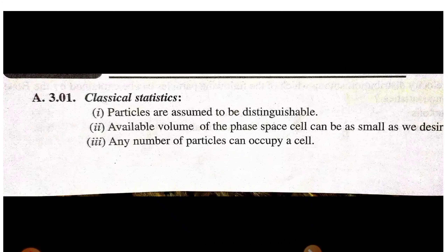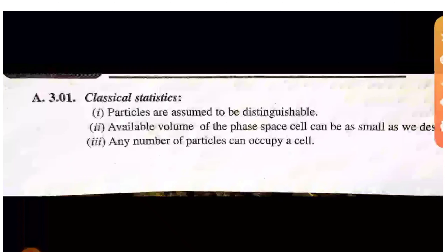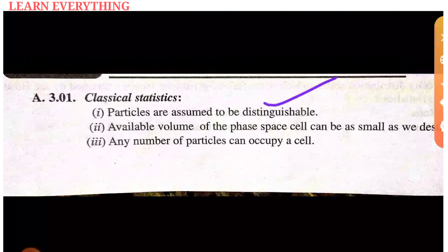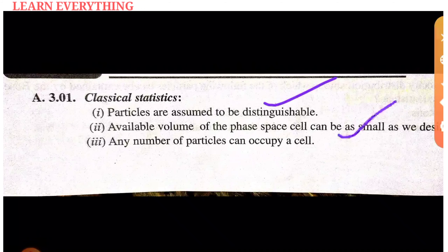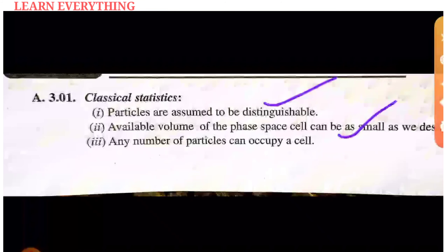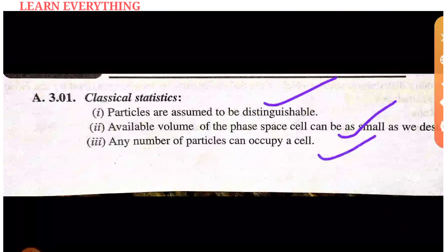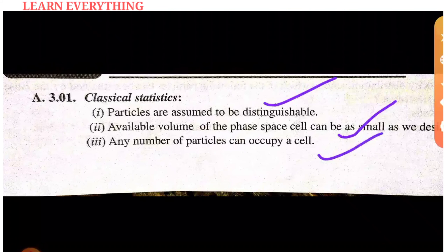First, I'm going to talk about classical statistics as a revision. The available volume can be as small as we desire. We talk about space cells — if you want to cut the volume, any number of particles can occupy a cell, and particles can be distinguished.